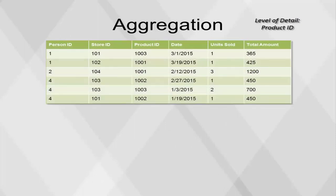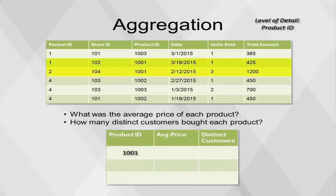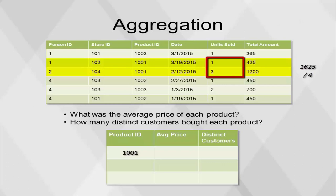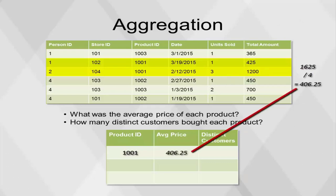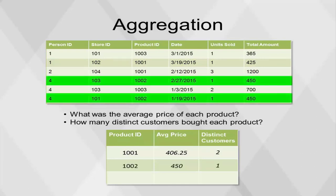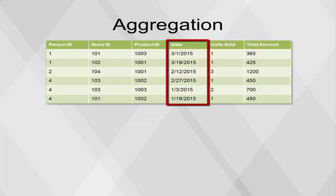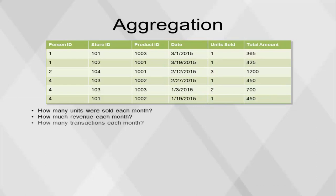Aggregating at the product level can answer basic questions about each product, such as the average price and how many distinct customers bought each product. For product ID 1001, the average price is calculated as the sum of total amount (1,625) divided by the sum of units sold (4), giving $406.25. Be aware that using an average function directly would not give the expected result. Distinct customers is calculated by counting the distinct number of person IDs for product ID 1001—there are two: person ID 1 and person ID 2. The final example uses the month and year components of the date field to calculate all possible levels of aggregation: units sold per month, revenue per month, transactions per month, average price, and distinct products sold each month.